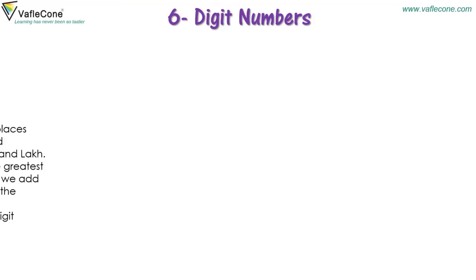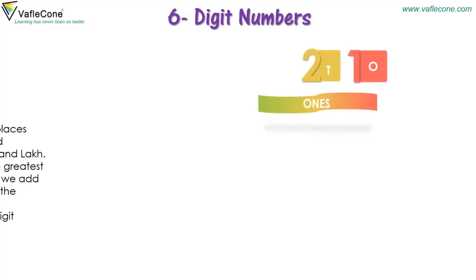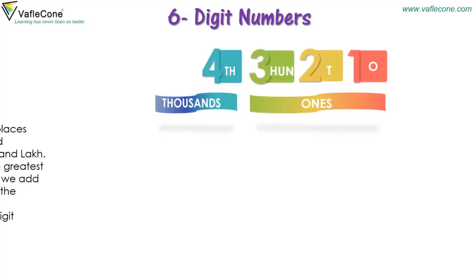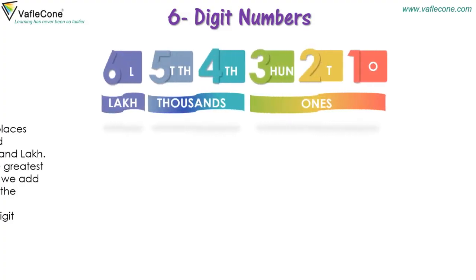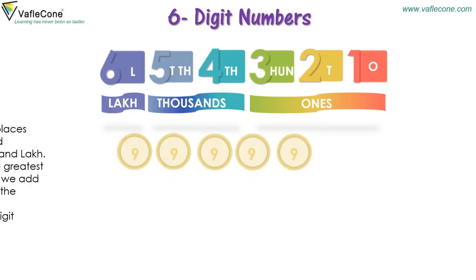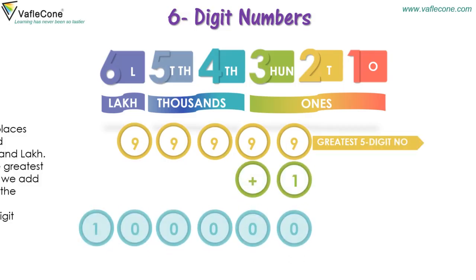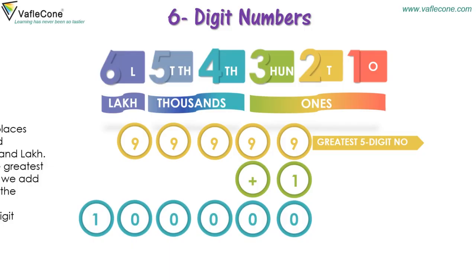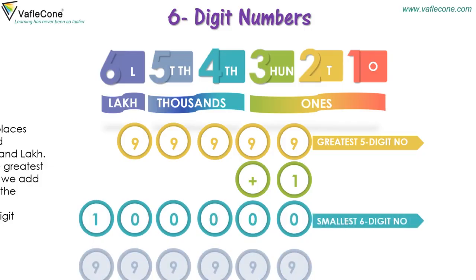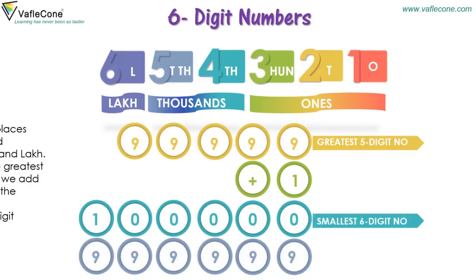6-digit numbers require 6 places. 1,00,000 is the smallest six-digit number. 9,99,999 is the greatest six-digit number.